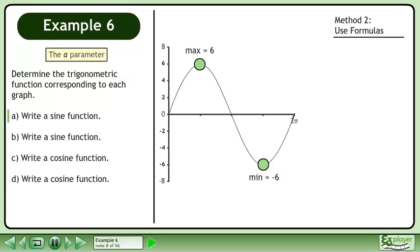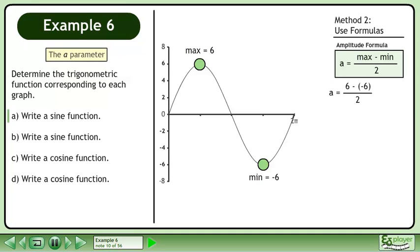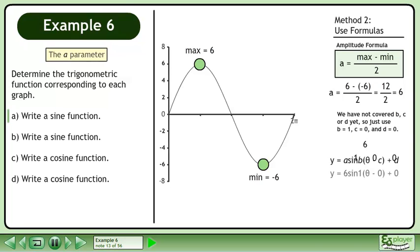The maximum value of the graph is 6 and the minimum value is negative 6. Use the amplitude formula: a equals max minus min over 2. Plugging in the values gives us 12 over 2, which becomes 6. We have not covered b, c, or d yet, so just use b equals 1, c equals 0, and d equals 0. Plugging the parameters into the sine function and simplifying gives y equals 6 sine theta. This is the same function we obtained using method 1.